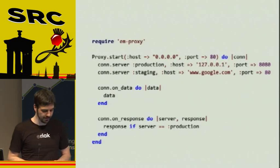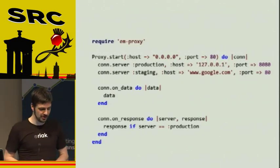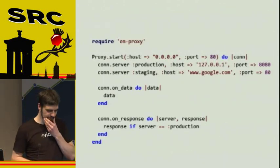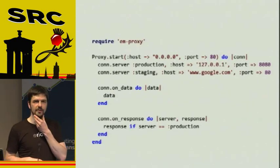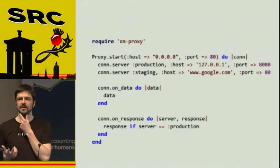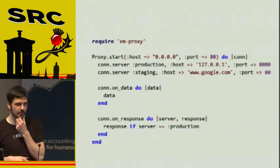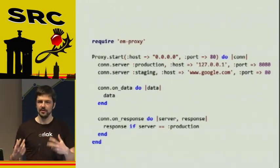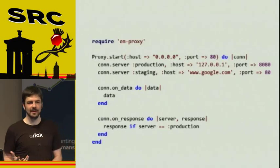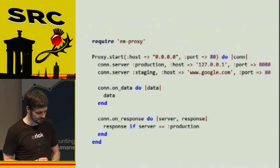A different story is EM proxy, once again written by Ilya Grigorik. He's kind of been a very early adopter, and he played with the fibers idea about two years ago already. Now that Ruby 1.9.2 is considered stable, there's no reason you shouldn't be at least playing with that kind of stuff, because it's really neat.